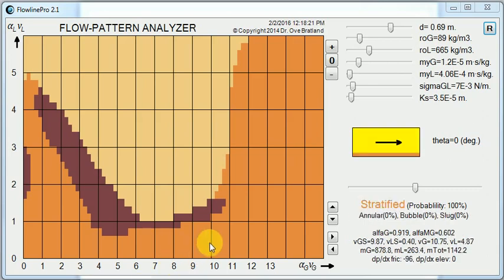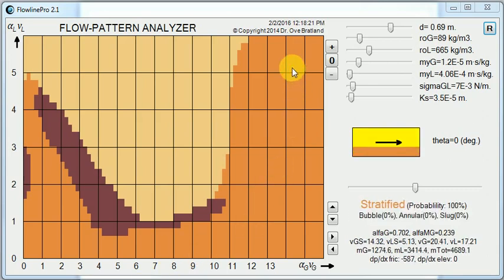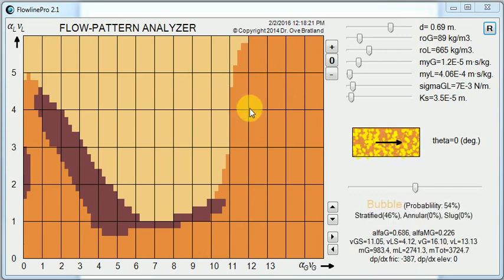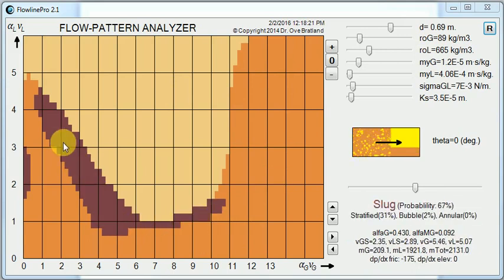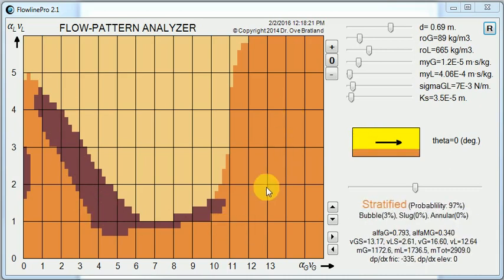We are able to take the cursor and move around in the diagram and then see what happens at various places. We can have bubble flow, we can have stratified flow, we can have slug flow of various types, and we can also have annular flow. We will look at more details there in a short moment.